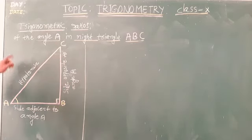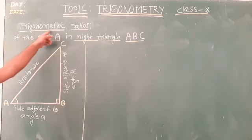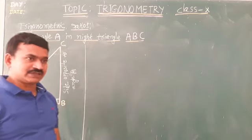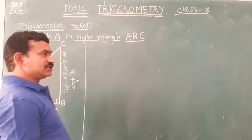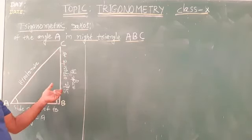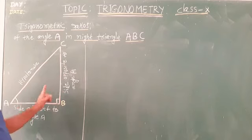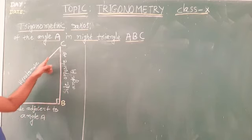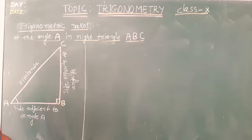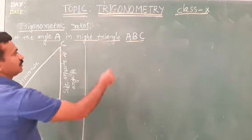Now, we know the trigonometry ratios. There are six trigonometry ratios. A ratio means the ratio of any two sides of the right angle triangle. We define the trigonometry ratios as follows.